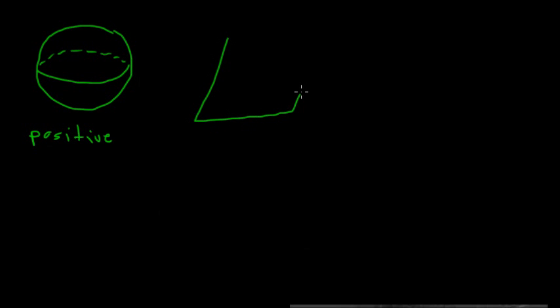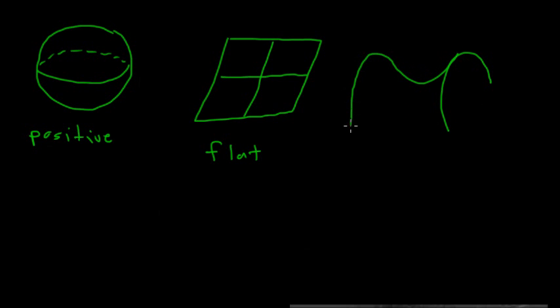And we had three different kinds of geometries that we could have. The first is the positively curved geometry, which looks like the surface of a sphere. We had a flat geometry, which is probably most comfortable to most people. And we had a geometry that is negatively curved, which looks like the surface of a saddle.